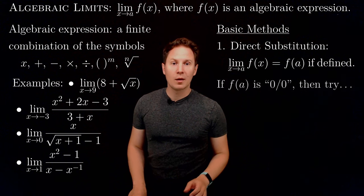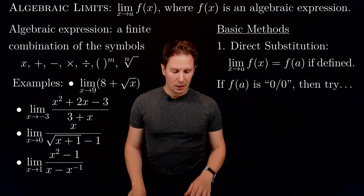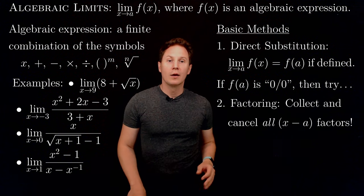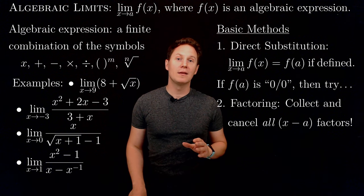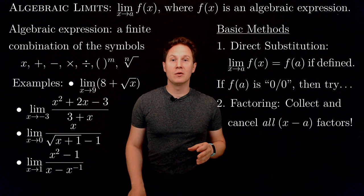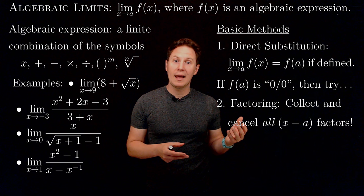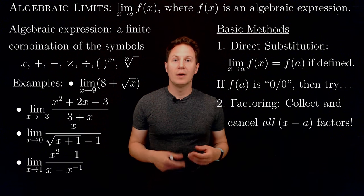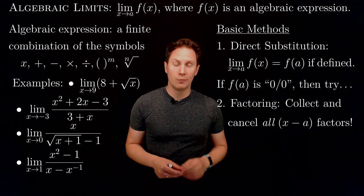If you are not lucky and you end up with f of a giving you, for example, 0 over 0, which is undefined, then you may try factoring. So you get 0 over 0 when you plug in x equals a, so that's an indication that there might be factors of x minus a in your expression, which you perhaps need to extract, collect and then cancel them all, so that you end up with a simpler expression where direct substitution should work.